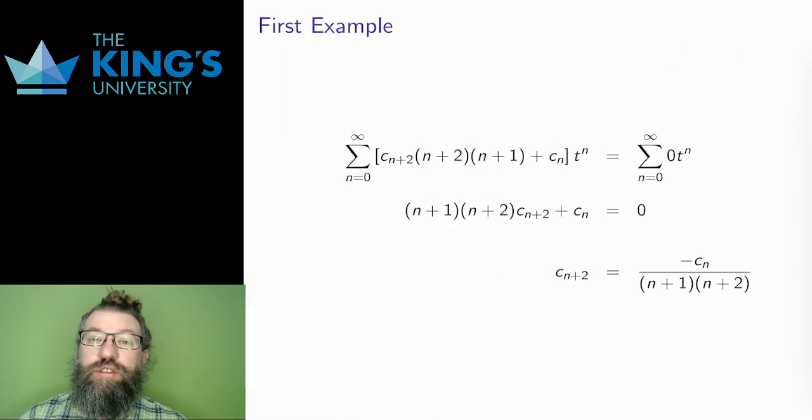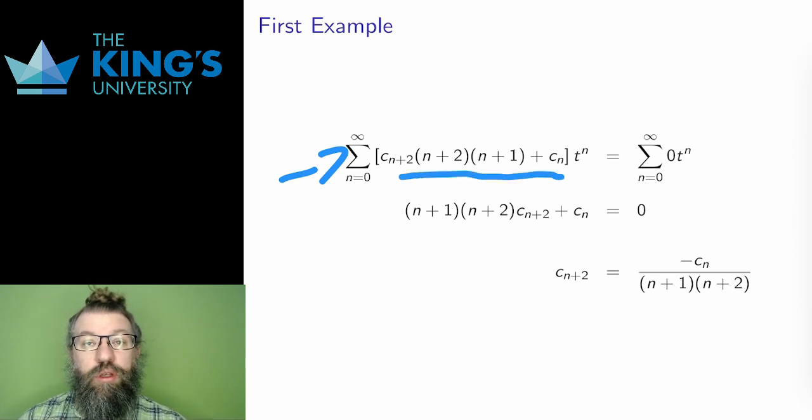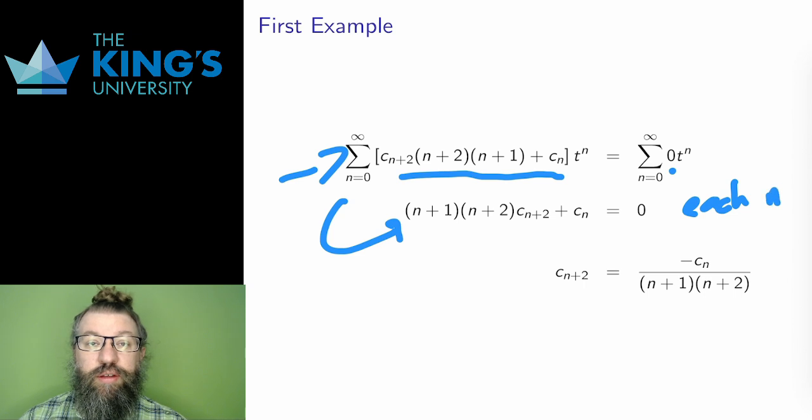Now I have an equation of series. Here is where a very important series fact comes into play. Two series are the same only if their coefficients are the same. So instead of writing one equation for series, I get an equation for each coefficient, one equation for each n. This is now infinitely many equations, but they do have a pattern. For each n, this statement is true about the coefficients.